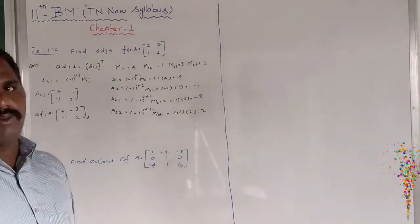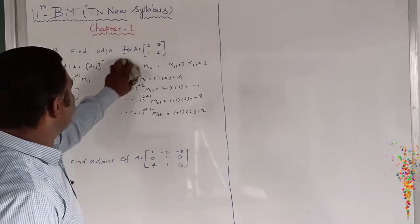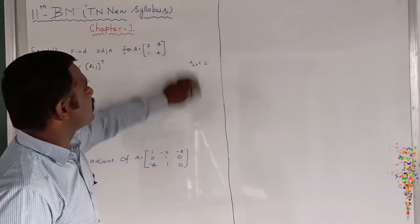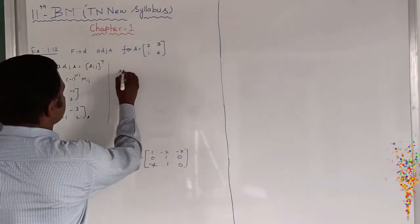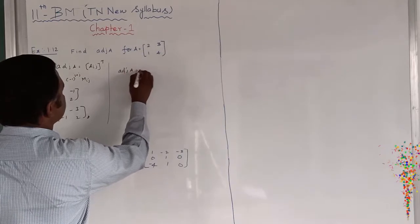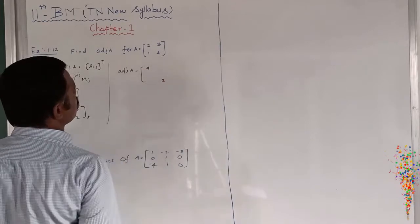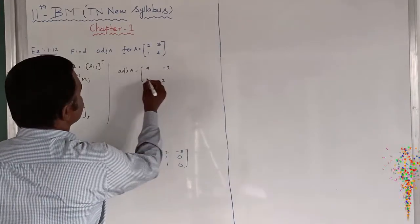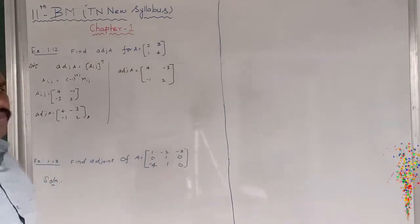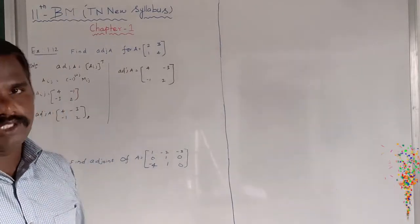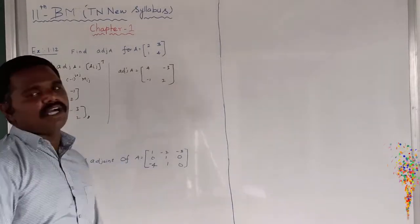Now I want to give a short method to find the adjoint of matrix A without finding the cofactor and minor, for a 2×2 matrix. For a 2×2 adjoint, we interchange the diagonal elements 4 and 2, and change the sign of the off-diagonal elements 3 and 1, giving [4, minus 3; minus 1, 2]. This is the adjoint of A by the 2×2 short method.